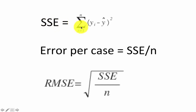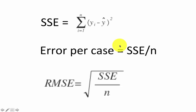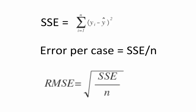We have the sum of squared errors: sigma from i equals 1 to n of (y-i minus y-hat) squared. Given the regression line, there was still some deviation from it, and we sum all of that. That is SSE across n points. For a single case on average, the error is SSE divided by n. In regression, we calculate the root mean squared error, or RMSE, which is the square root of SSE divided by n. We will use RMSE as our main criterion to decide on the quality of a regression model.